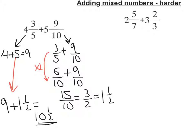So let's look at our second example. So the first thing is let's add our two whole numbers, so 2 and 3 is 5. And now let's add our two fractions, 5 sevenths plus 2 thirds.